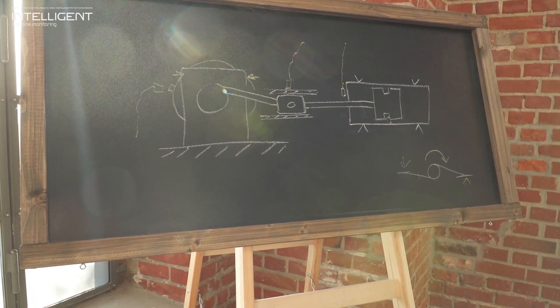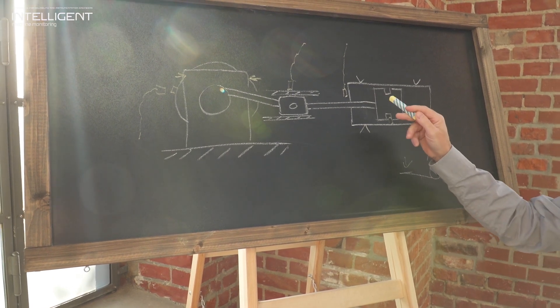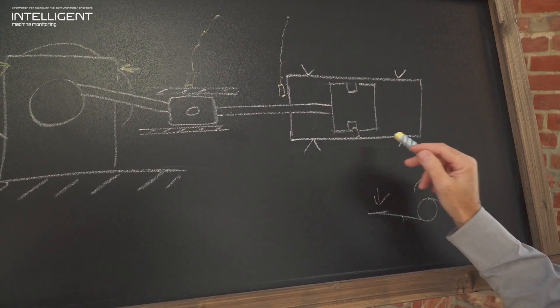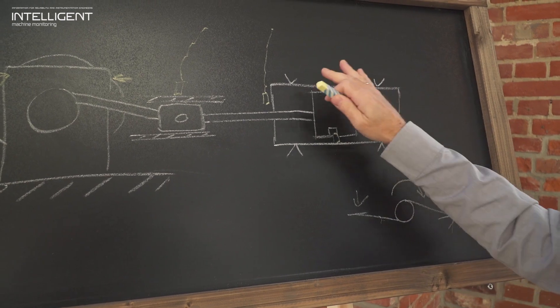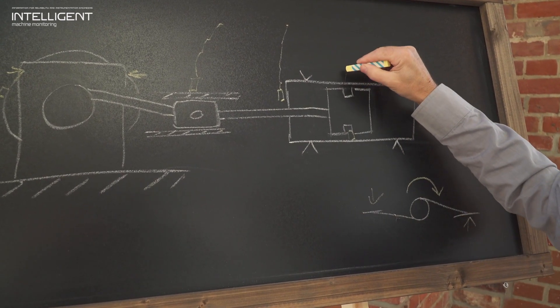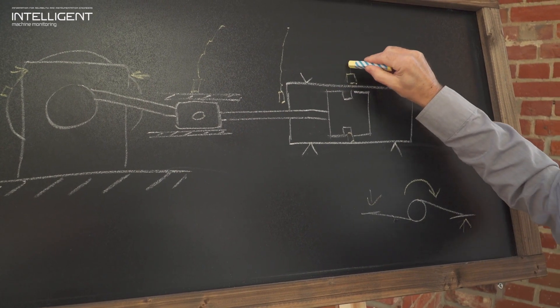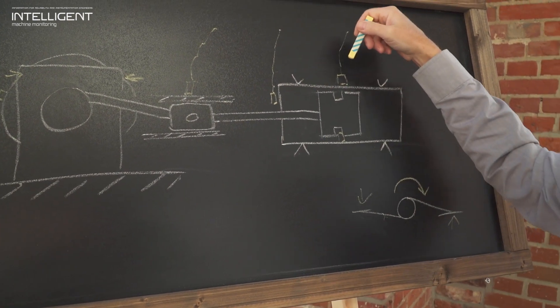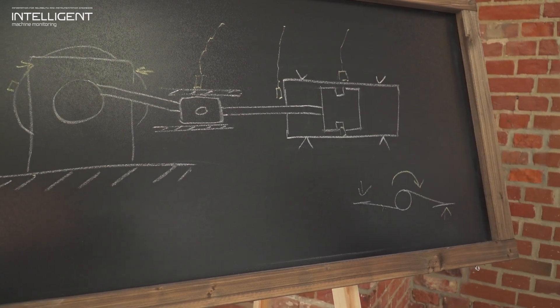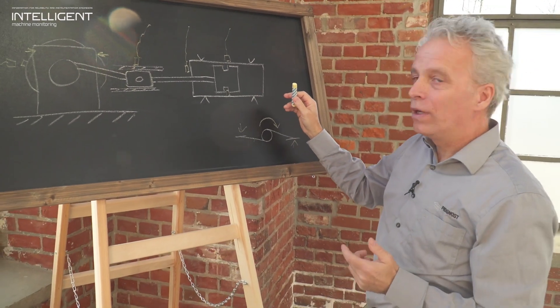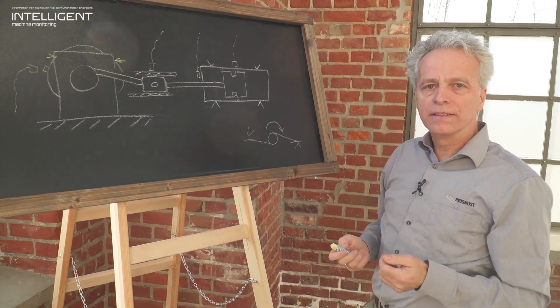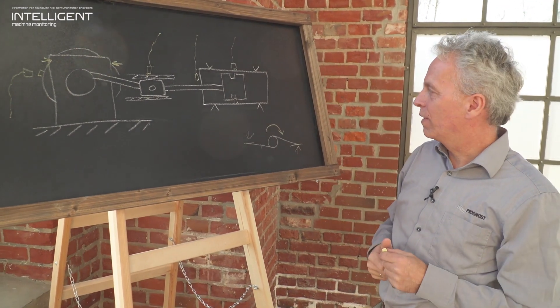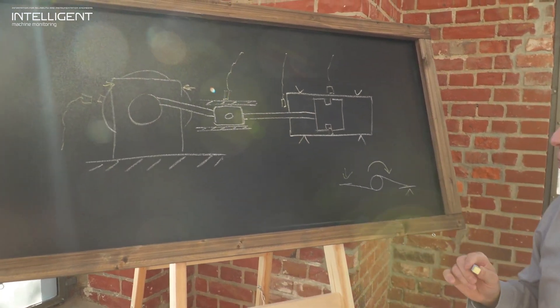Now we come to the components of the reciprocating compressors which statistically account for most of the problems, and that are the valves: suction valves and discharge valves. To monitor all the valves of one cylinder, we recommend to install one acceleration sensor in the middle between the valves at the head end and crank end, close to the suction nozzle. With this acceleration sensor we can pick up all impacts caused by the valves and also anomalies like for example clogged valves, sticking valves, meaning late closing valves, or broken valve plates.